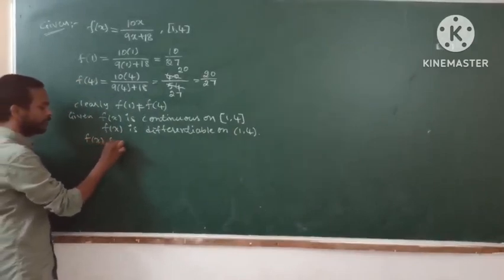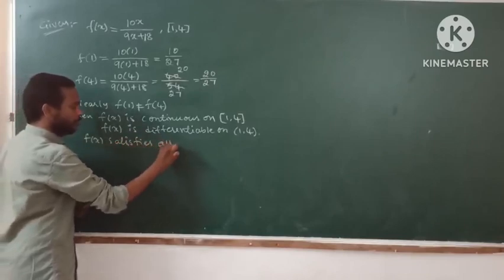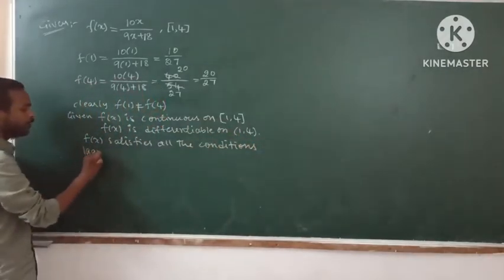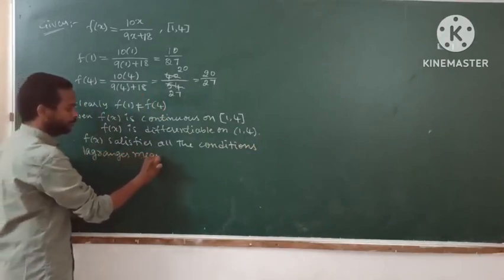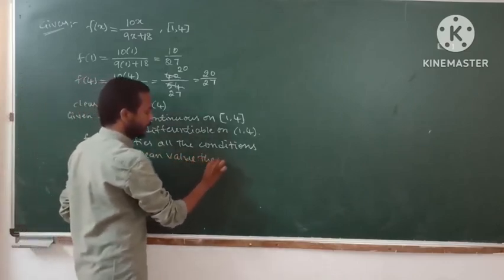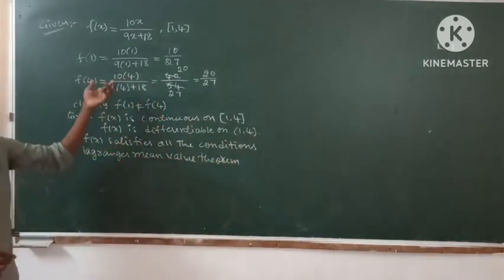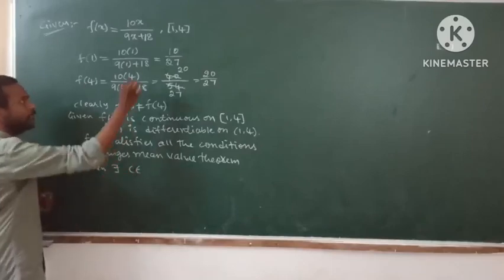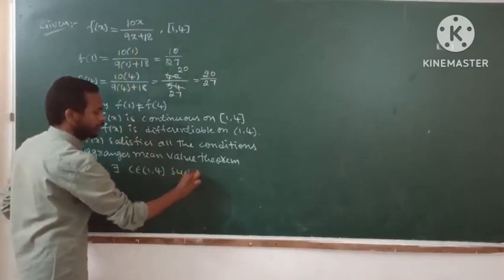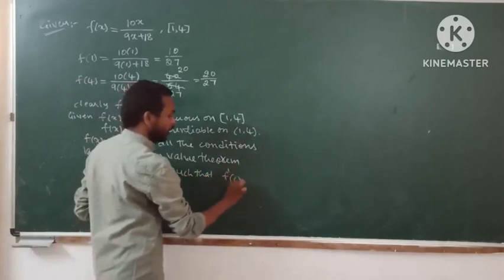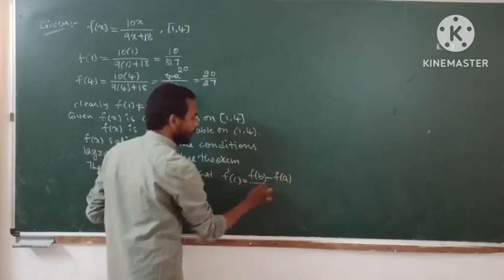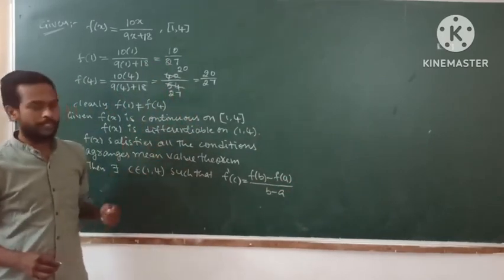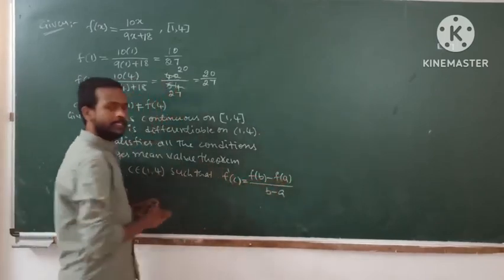Therefore, f(x) satisfies all the conditions of Lagrange's mean value theorem. If the given function satisfies all the conditions of the mean value theorem, then there exists c belonging to the open interval (1, 4) such that f'(c) = [f(b) − f(a)] / (b − a). This is the formula and the method to solve the given function using the mean value theorem.